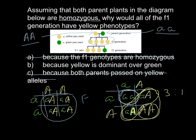Heterozygous means it has both dominant and recessive alleles. The parents are homozygous — Parent 1 and Parent 2 are homozygous because both of their alleles are of the same kind. In Parent 1, both alleles are dominant, and in Parent 2, both alleles are recessive. So the correct answer is B.